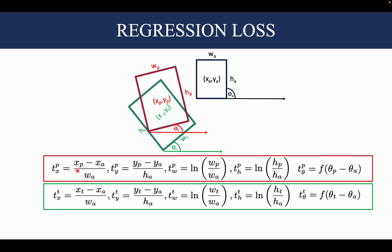txp would be xp minus xa, that is the difference between the x center point coordinate of the predicted bounding box and the anchor, divided by wa to make it scale invariant.